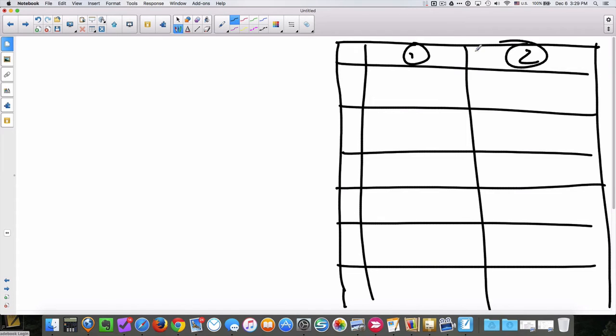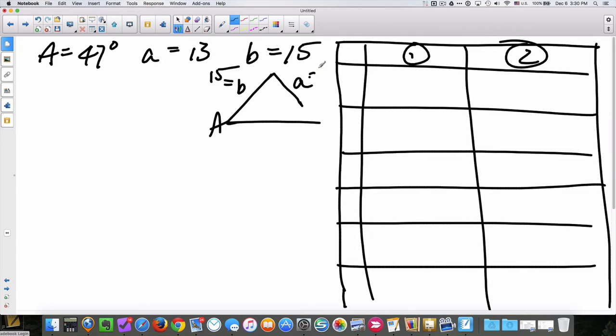We do that by building a little table to keep track of information, and we start solving the problem. Let's say that I started out with angle of 47 degrees, side length opposite that of 13, and a second side length that is 15. This would be angle A, this would be angle B, and then the side opposite angle A would be side a. So this guy would be 15, this guy would be 13.